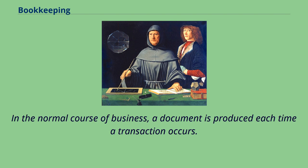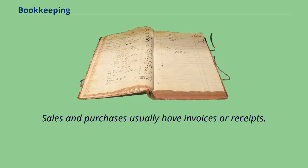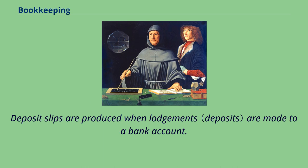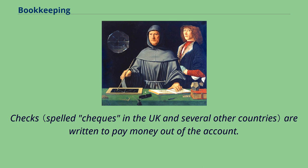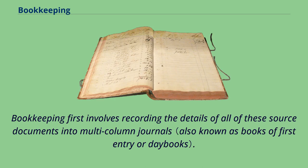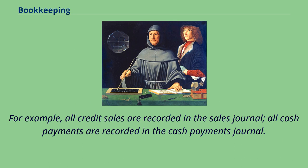In the normal course of business, a document is produced each time a transaction occurs. Sales and purchases usually have invoices or receipts. Deposit slips are produced when lodgements are made to a bank account. Checks are written to pay money out of the account. Bookkeeping first involves recording the details of all of these source documents into multi-column journals. For example, all credit sales are recorded in the sales journal, and all cash payments are recorded in the cash payments journal.